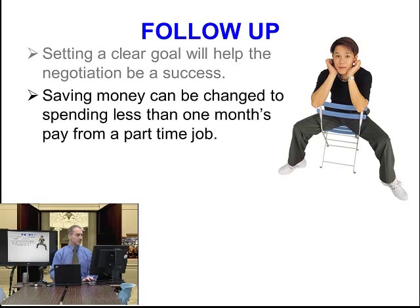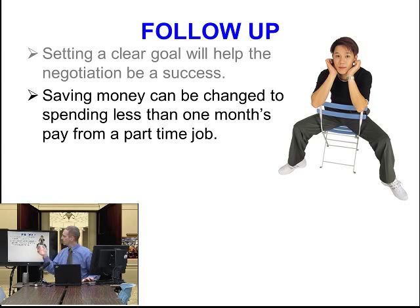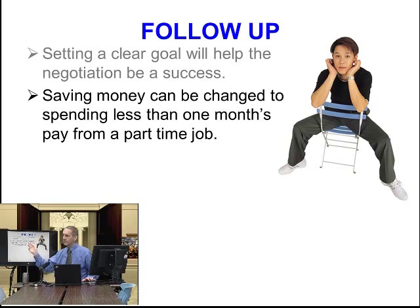We need to measure it. Let's take the idea of saving money. We begin with: I want to save money, I don't want to spend money. This can be changed to be more specific. In this case, we can make it something like: spend less than one month's pay from a part-time job. So this student has a part-time job, and he would like to spend less than that one month's pay.